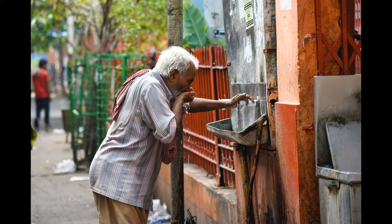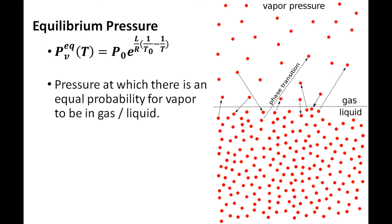In order to present the technology that exists today and our model, we must first explain a few basic concepts in thermal physics. First is the concept of equilibrium pressure. This is the point at which a material's molecules have an equal probability to be in vapor or condensed state. So if, for example, water vapor is at equilibrium pressure, it has an equal probability of staying in vapor state or condensing.